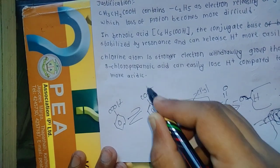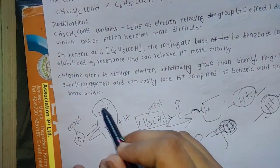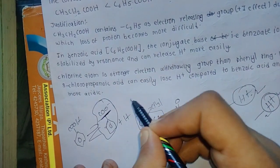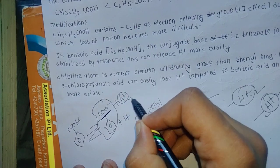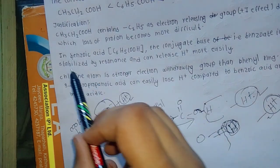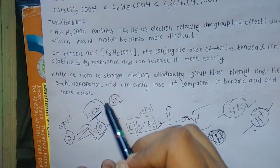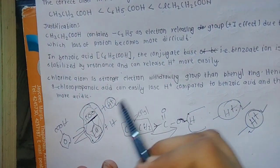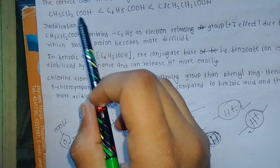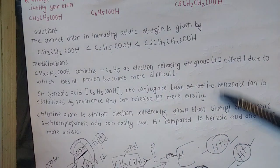In benzoic acid, the benzene ring forms a conjugate base that is resonance-stabilized. The conjugate base (benzoate ion) is stable due to resonance delocalization, which makes it a regionalized stable structure. This allows benzoic acid to release H+ more readily than propanoic acid, making it more acidic.